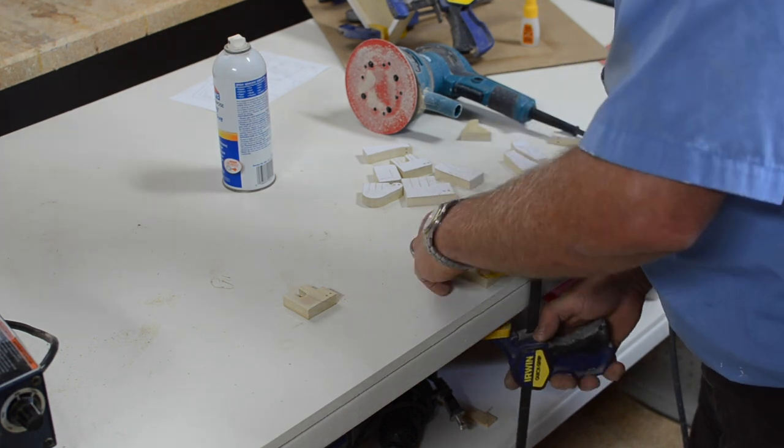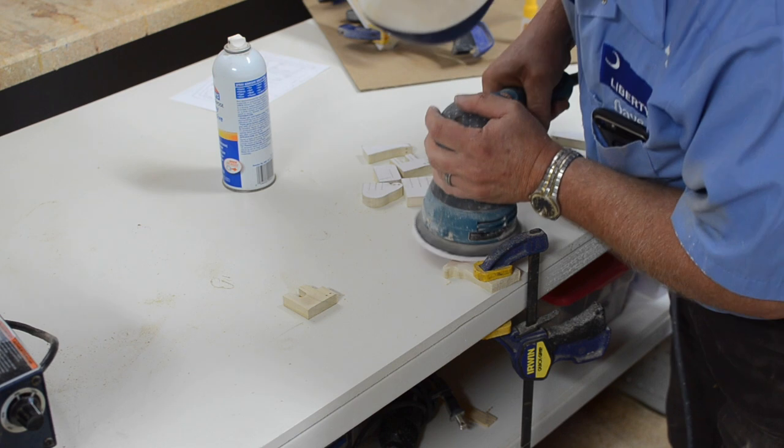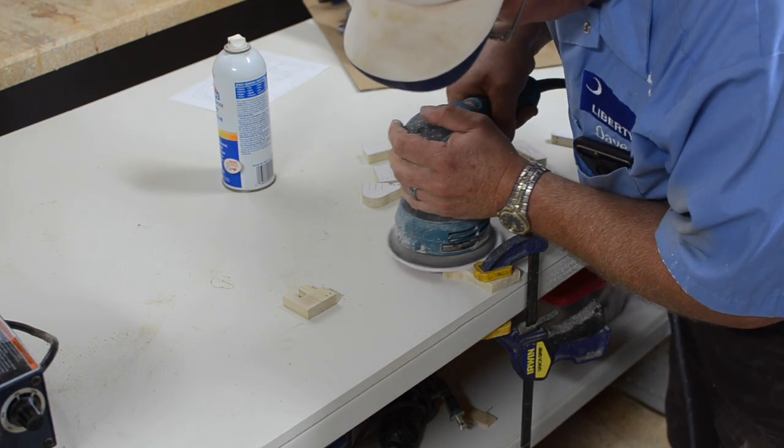Now we need to sand the paper off of the wood. To do this, we found it easier to clamp the pieces to the side of the table and then sand the paper off.